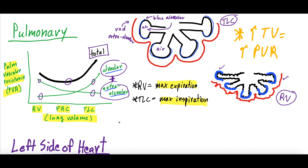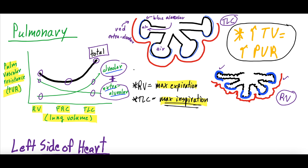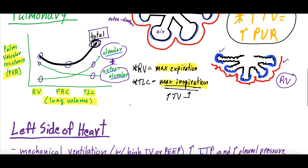The total pulmonary vascular resistance is alveolar plus extra-alveolar PVR, and it follows a U-shaped curve. Your lowest PVR is at FRC — functional residual capacity — right after a normal expiration, not a max expiration. PVR is higher during max expiration and max inspiration. Overall, with increased tidal volumes on the ventilator, your PVR increases because high tidal volumes push toward max inspiration, where PVR is highest.